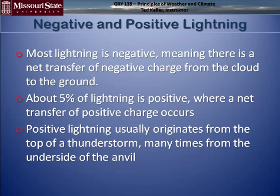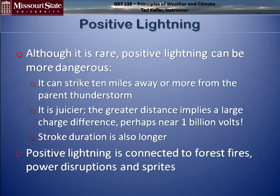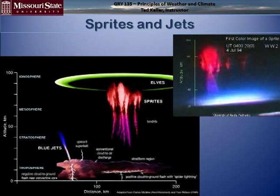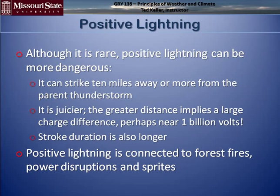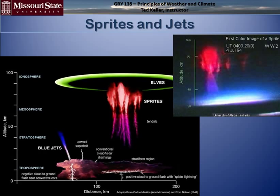Positive lightning is bad — about 5% of all lightning is positive. It comes from the positive charge up in the anvil at the top of the storm. The reason it's dangerous is because it strikes away from the main thunderstorm — you may not even know you're in trouble. It comes from the anvil, can turn at a 90-degree angle, is juicier with more voltage potential, and lasts longer. It's connected to forest fires, power disruptions, and sprites — those little jets informally observed by pilots for years, and finally captured on videotape by sensitive camera equipment.